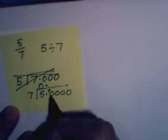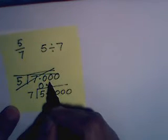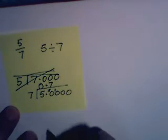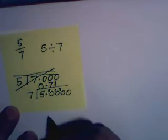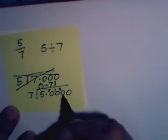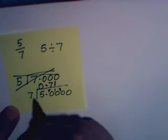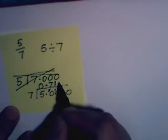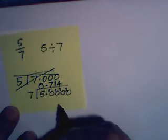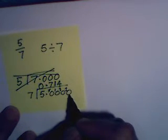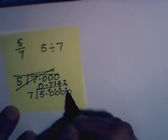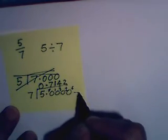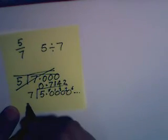Now 7 times 7 is 49, so it goes 7 times with 1 remainder. How many 7's go into 10? 1 remainder 3. How many 7's go into 30? Well, 4 times 7 is 28, so it goes in 4 times remainder 2. How many 7's go into 20? 2 times 7 is 14, so it goes in 2 with a remainder of 6. And it carries on.